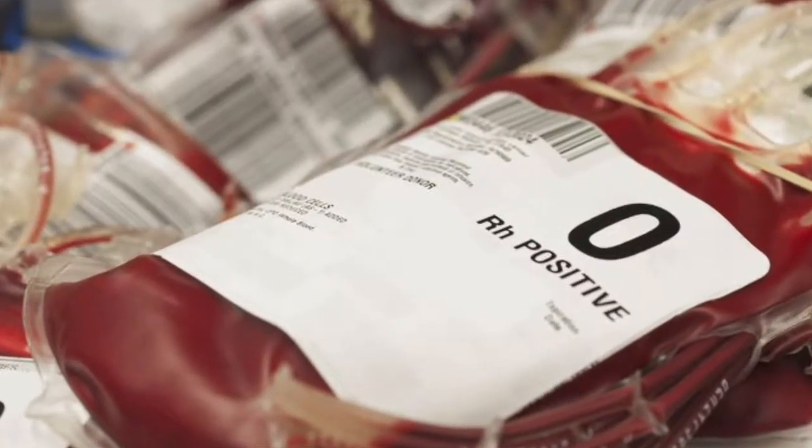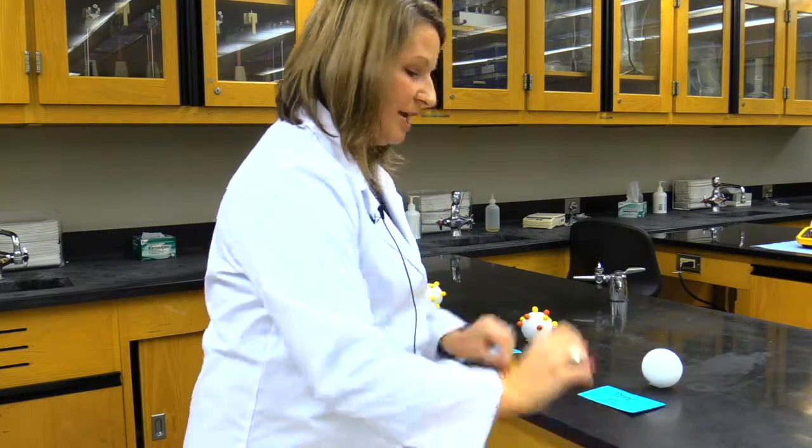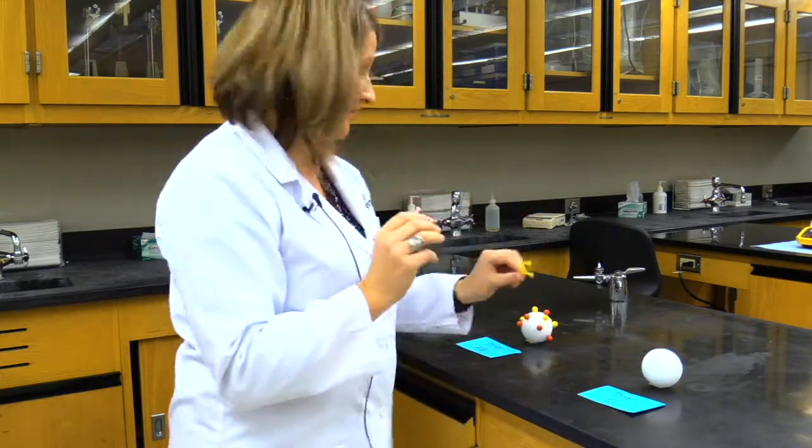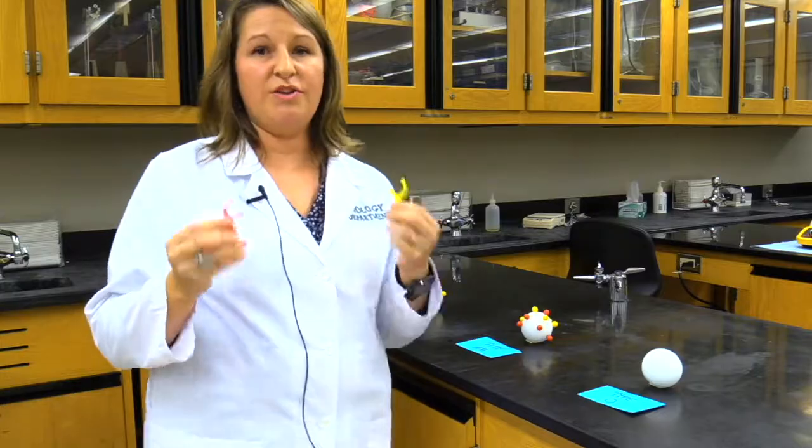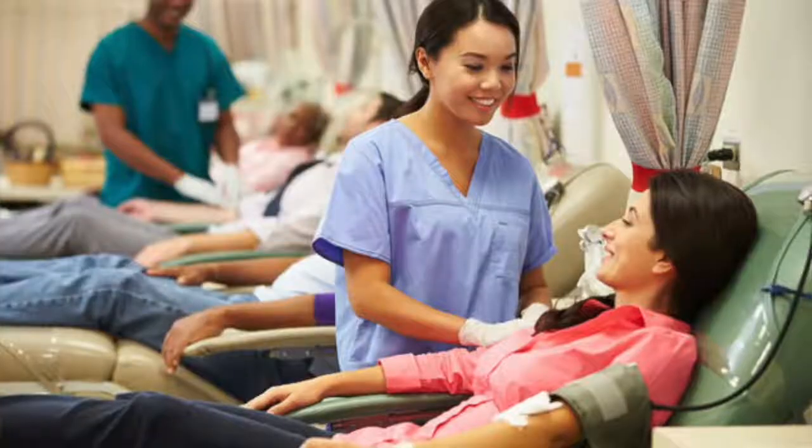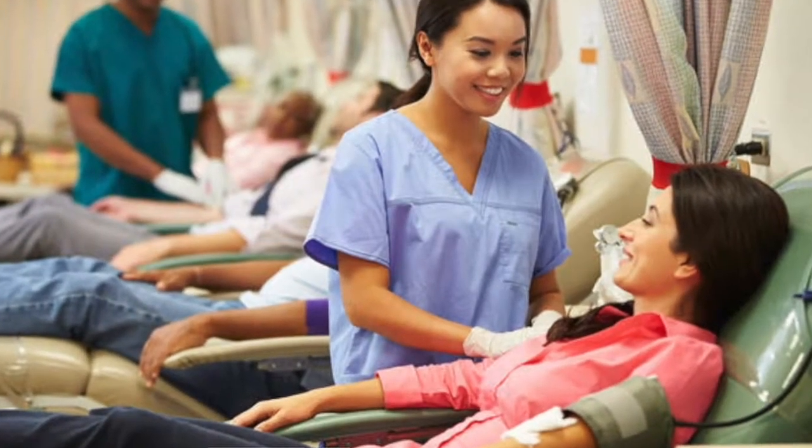The unfortunate thing about people with type O is that they have to take type O themselves. Because they have these two antibodies, they can't take any of these other blood types because they will have that transfusion reaction. So type O, universal donor, but they have to take only type O themselves.